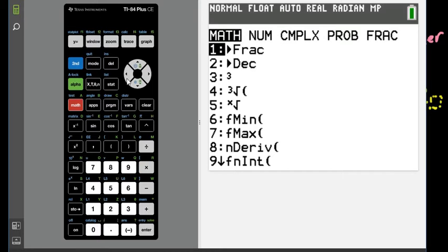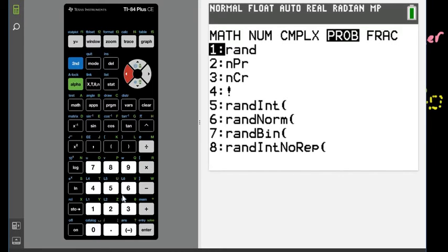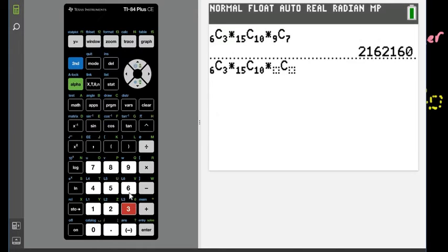Times and then again math probability option 3 and for some of you instead of PROB it might be PRB they have changed some of the programming in newer editions so for this one we could have 9 things taken 7 at a time and so you end up with the same answer so it's just a matter of what your calculator allows you to do.